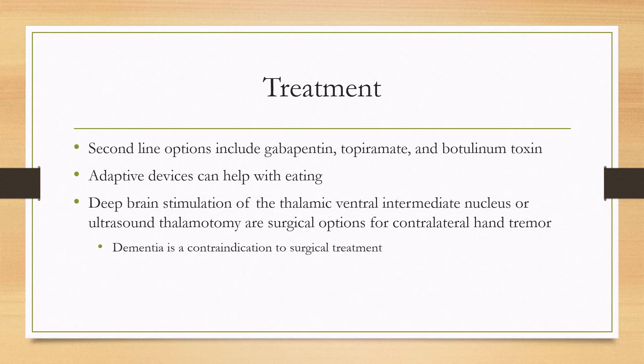Second-line options also exist, which can include gabapentin, topiramate, and botulinum toxin. There are also non-pharmacologic options such as adaptive devices — an example would be a spoon that vibrates to cancel out the tremor of the patient when eating. If all others fail, there are surgical options as well, such as deep brain stimulation of the thalamic ventral intermediate nucleus or ultrasound thalamotomy, and these can help for contralateral hand tremor.